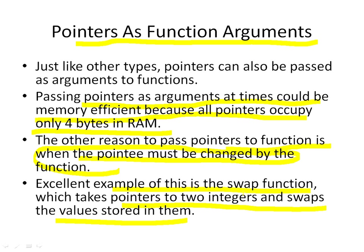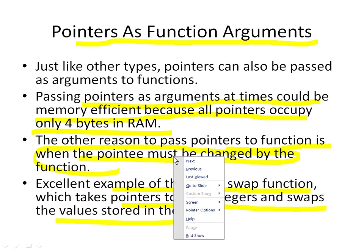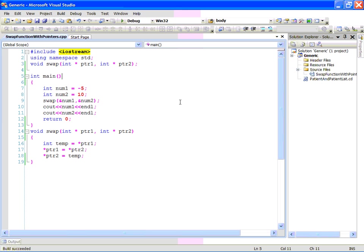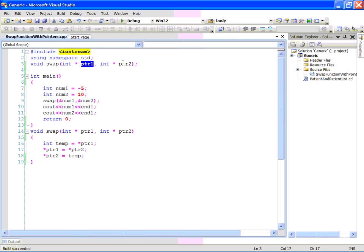Before we go any further, let me take you to Visual Studio. I want to show you the code for the swap function and make sure you understand that it works. This is my program. This is the swap function I am talking about. It's taking two int pointers, PTR1 and PTR2, as arguments. That's the prototype.